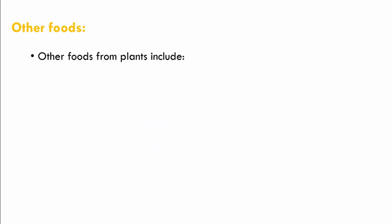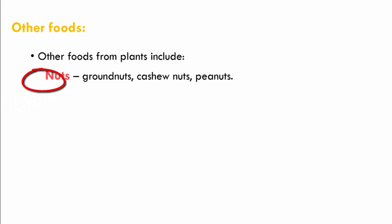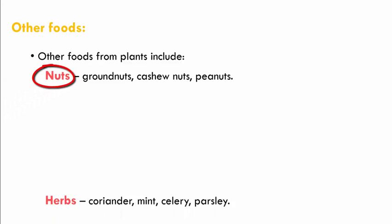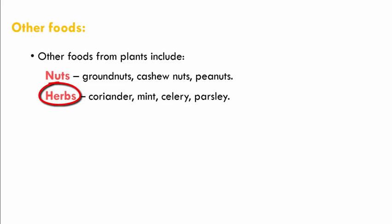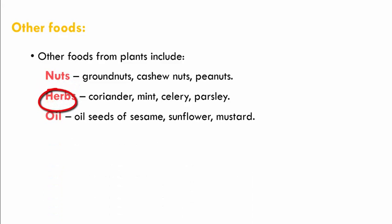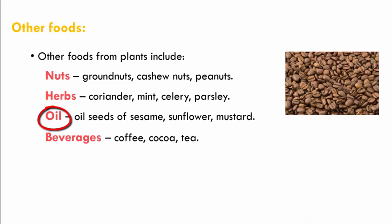Other foods we get from plants include nuts such as groundnuts, cashew nuts and peanuts. There are herbs such as coriander, mint, celery and parsley. Oils such as sesame oil, sunflower oil and mustard oil are obtained from the seeds of sesame, sunflower and mustard plants.